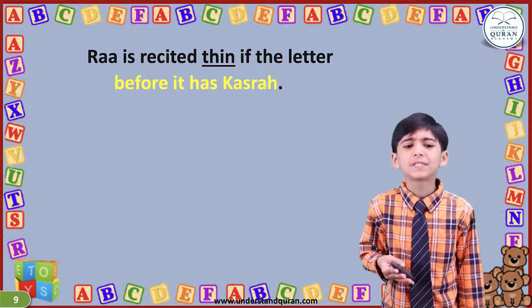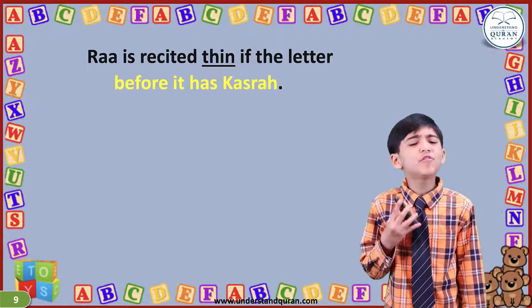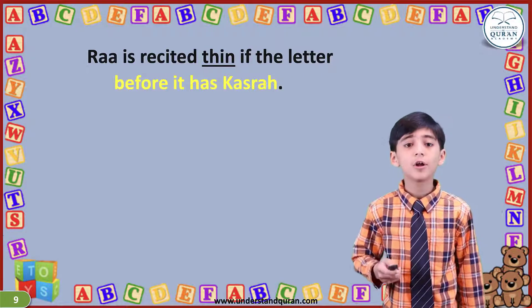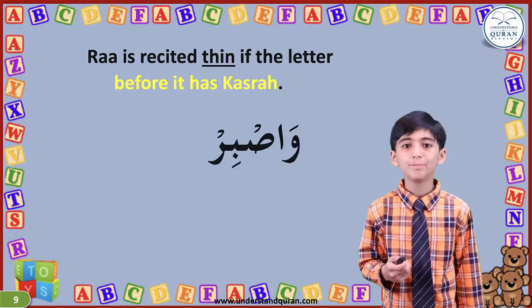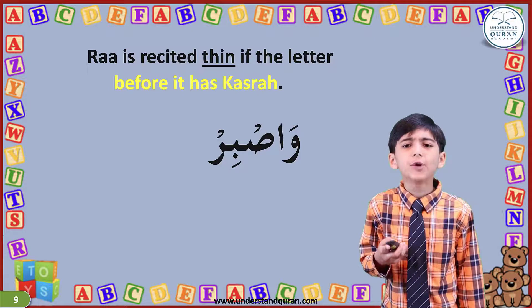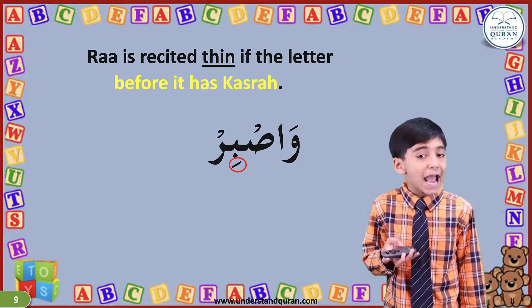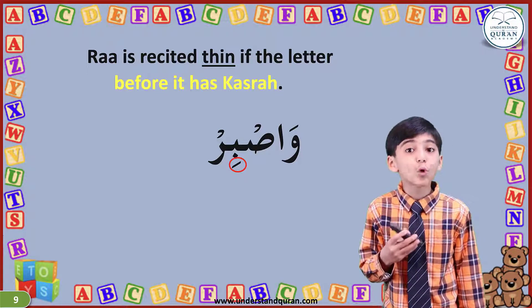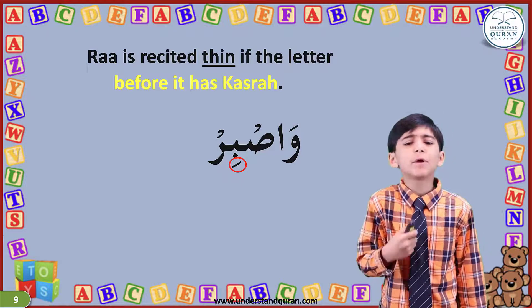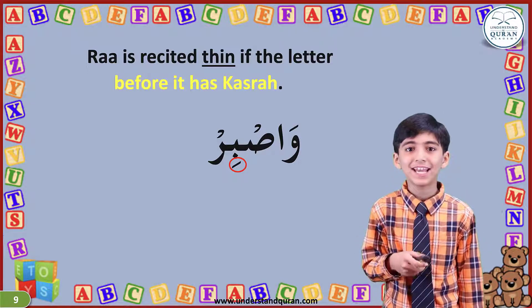Ra is also recited thin if the letter before it has kasra. Over here in Wasbir, this Ba has kasra and it is right before Ra — that's why we must recite this Ra thin.